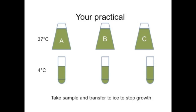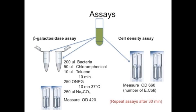Your first task is to take an aliquot from the flask incubating at 37 degrees and transfer it to 4 degrees, thus stopping the growth of the bacteria. You will then carry out the assay. For the beta-galactosidase assays, you will be doing duplicates. To each of the tubes, you will add some bacteria, some chloramphenicol — which is an antibiotic to kill the bacteria — and some toluene to partially solubilize the membrane.